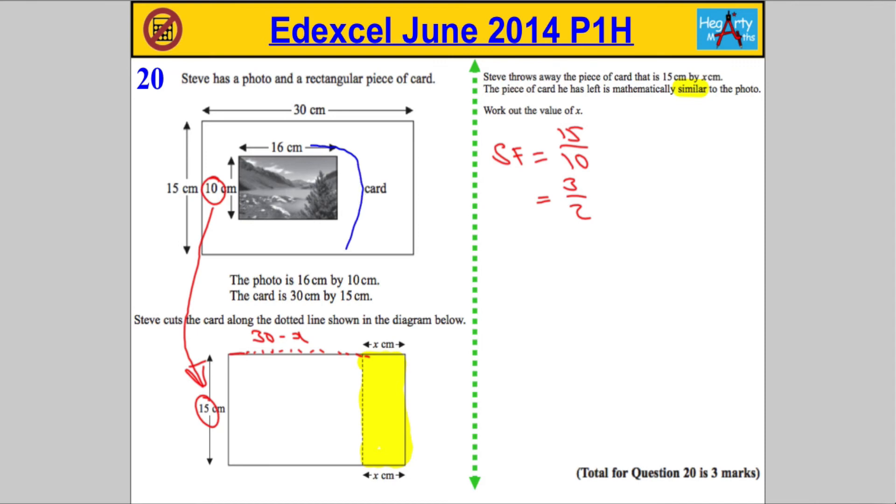So how do we get from here to here? Well, we would multiply by that scale factor. So 16 multiplied by my scale factor 3 over 2 must be equal to this side here, 30 minus X.